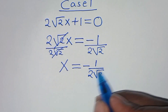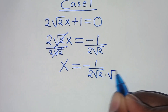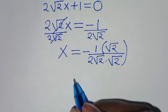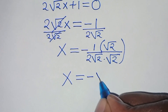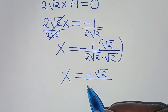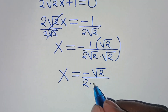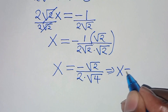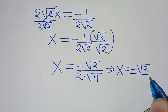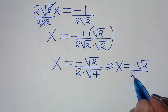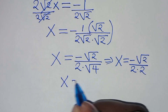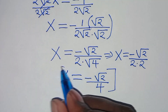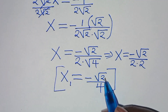To rationalize the denominator, we multiply numerator and denominator by √2, giving x equals negative √2 divided by 2 times √2 times √2, which is √4 equals 2. So x equals negative √2 divided by 2 times 2, which is 4. Therefore x₁ equals negative √2 over 4.